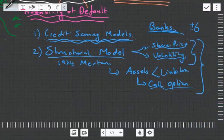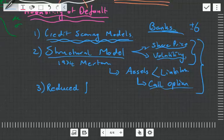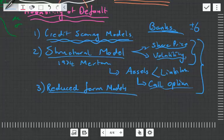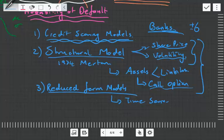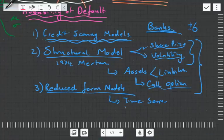Next, we get something known as reduced form models. Reduced form models are going to be using statistical processes. They want to take a general economic viewpoint and see how the environment is going. So they would have something like a time series and model the economic environment.